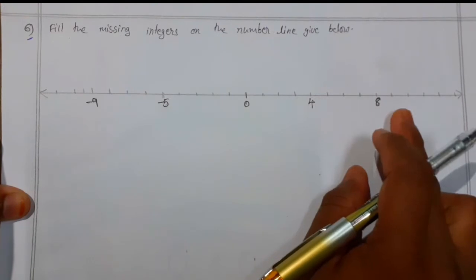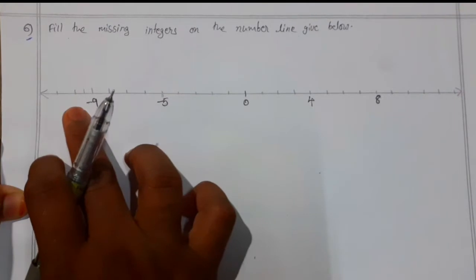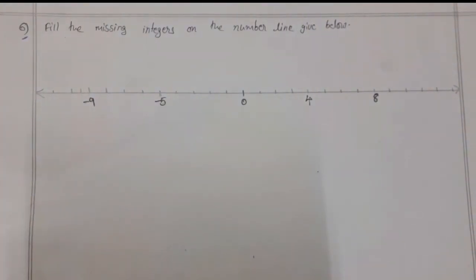We have given the number line, and on this number line there are some numbers which are marked on it and there are gaps. We need to fill those gaps with the appropriate numbers.